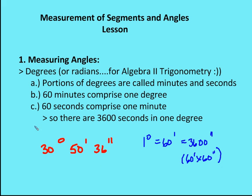We can write degrees as a decimal as well — for example, 30.5 degrees. Or we could write it in degrees, minutes, and seconds. What we want to do is learn how to convert back and forth between a decimal degree and a value represented in minutes and seconds.